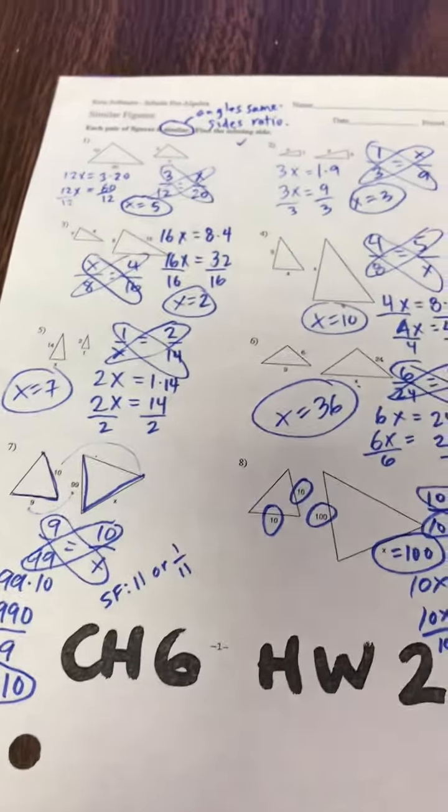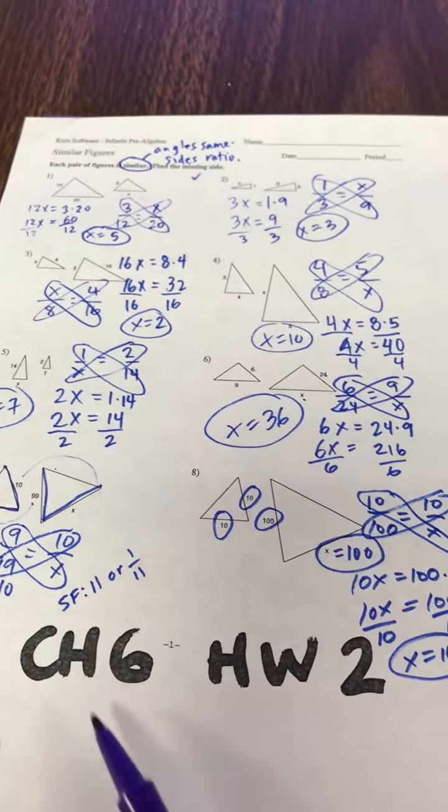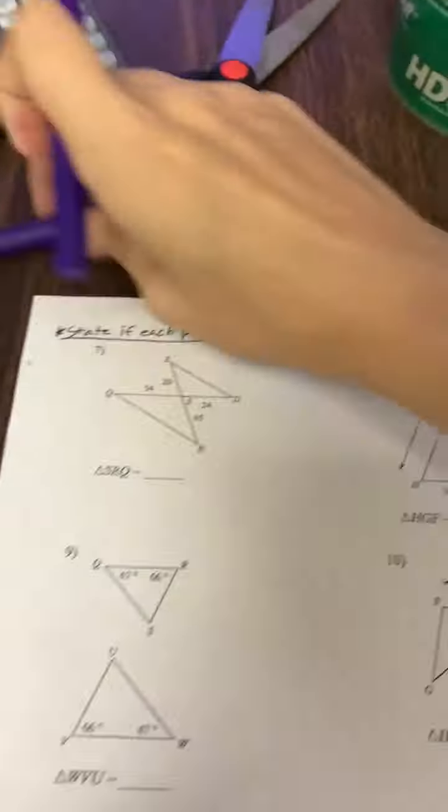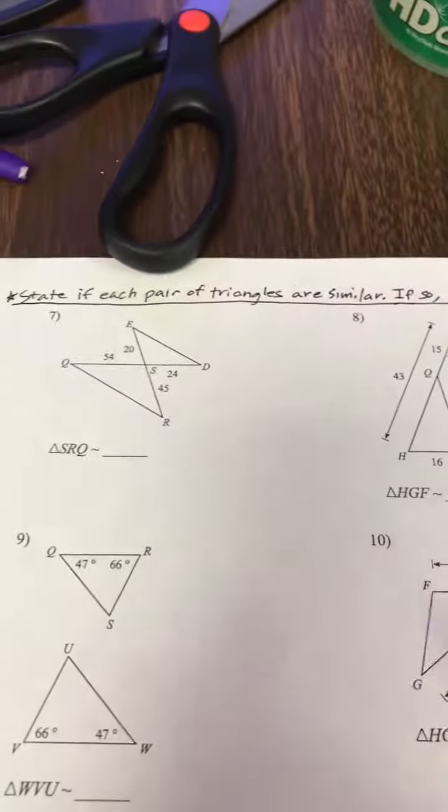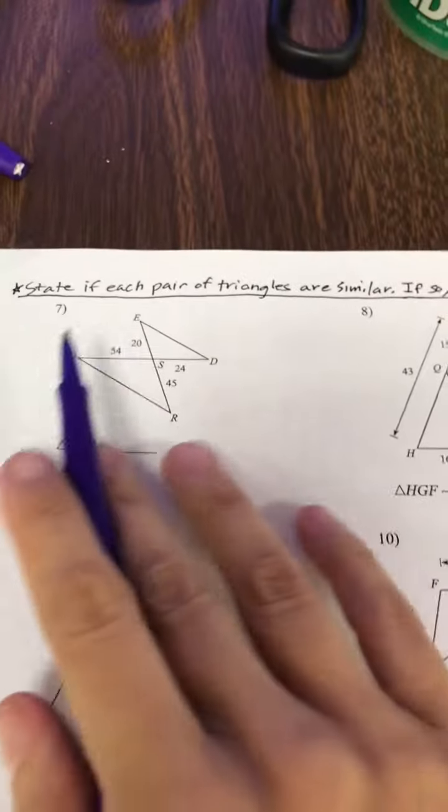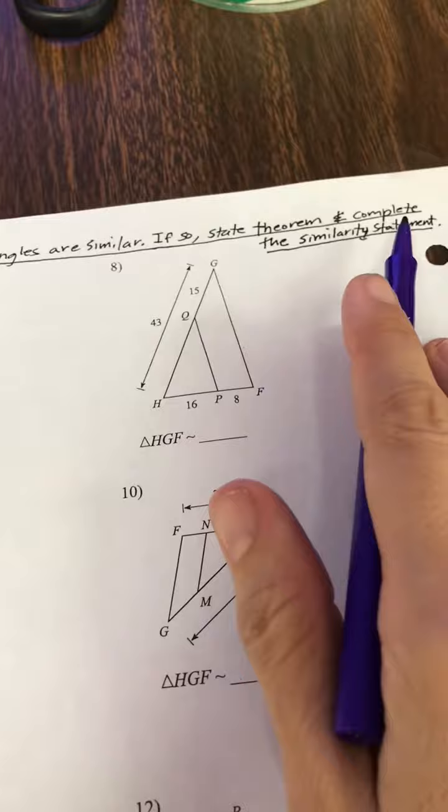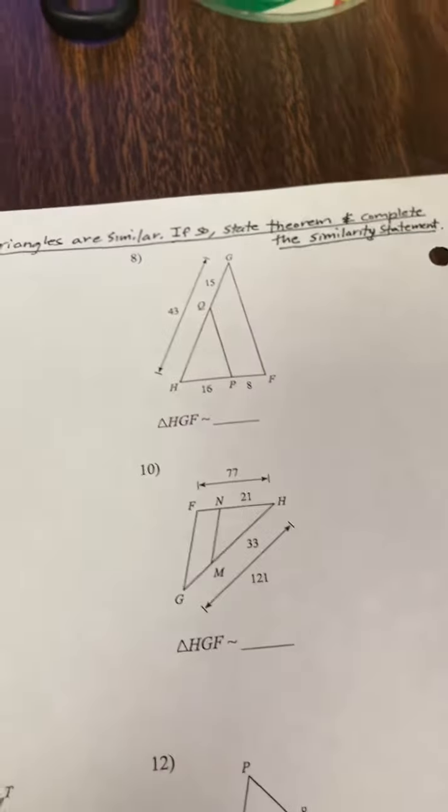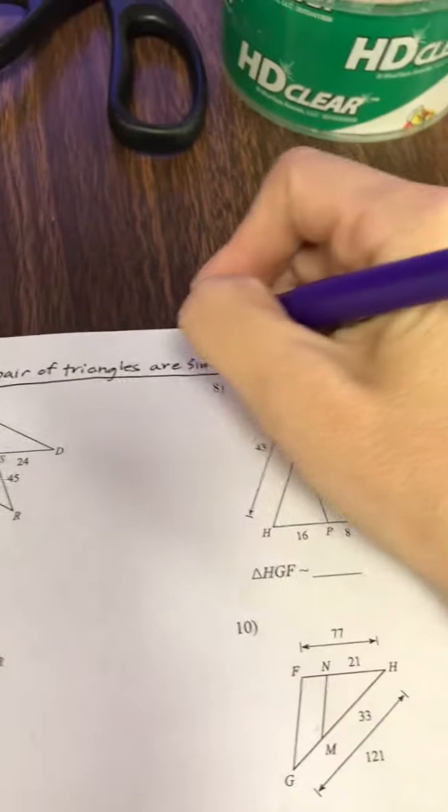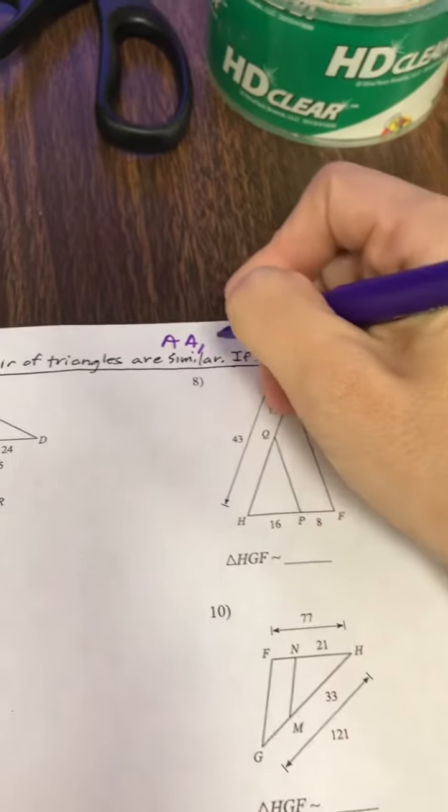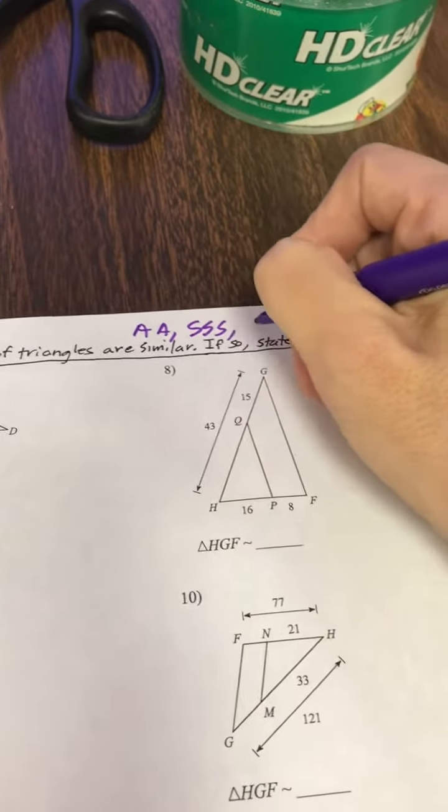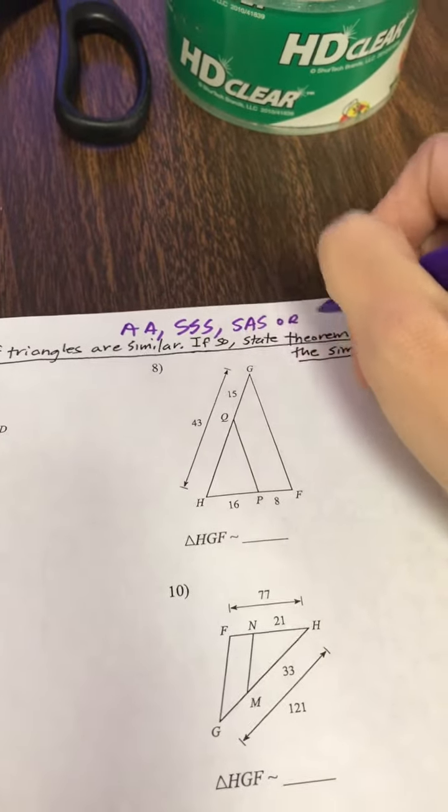Welcome back. We are now on the second video for Chapter 6, Homework 2. As we look at the back, we notice that the directions have changed. So let's take a look. It says, state if each pair of triangles are similar. If so, state the theorem and complete the similarity statement. So our choices are AA, SSS, SAS, or not.